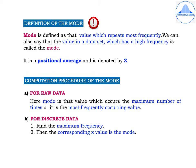Definition of the mode: Mode is defined as that value which repeats most frequently. We can also say that the value in a data set which has the highest frequency is called the mode. Remember that the mode is a positional average and it is denoted by Z. For raw data, the mode is the value which occurs the maximum number of times.